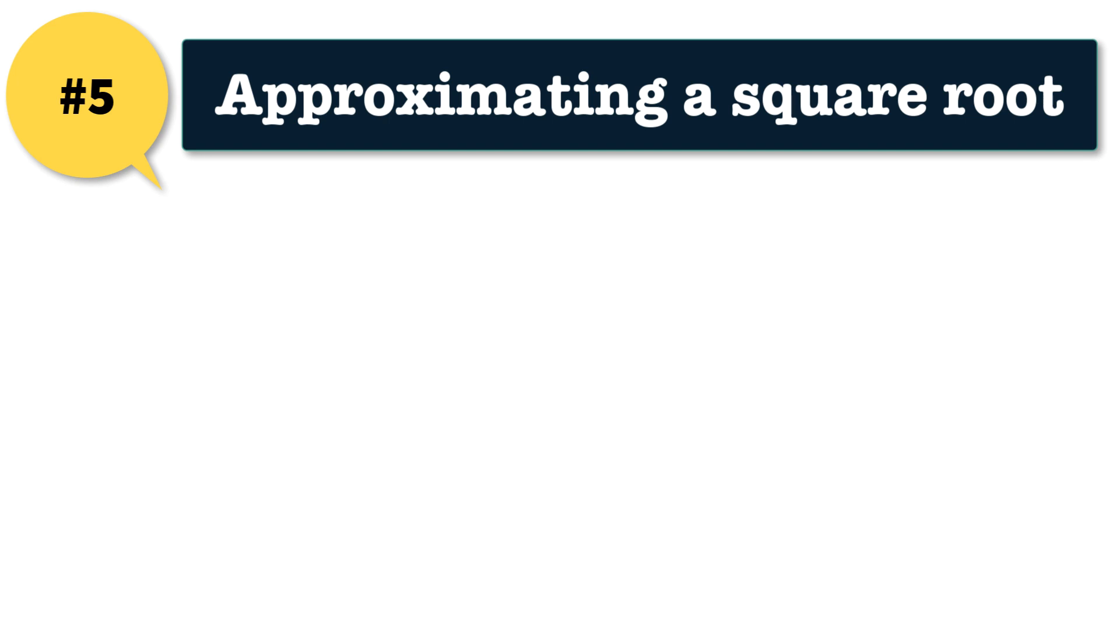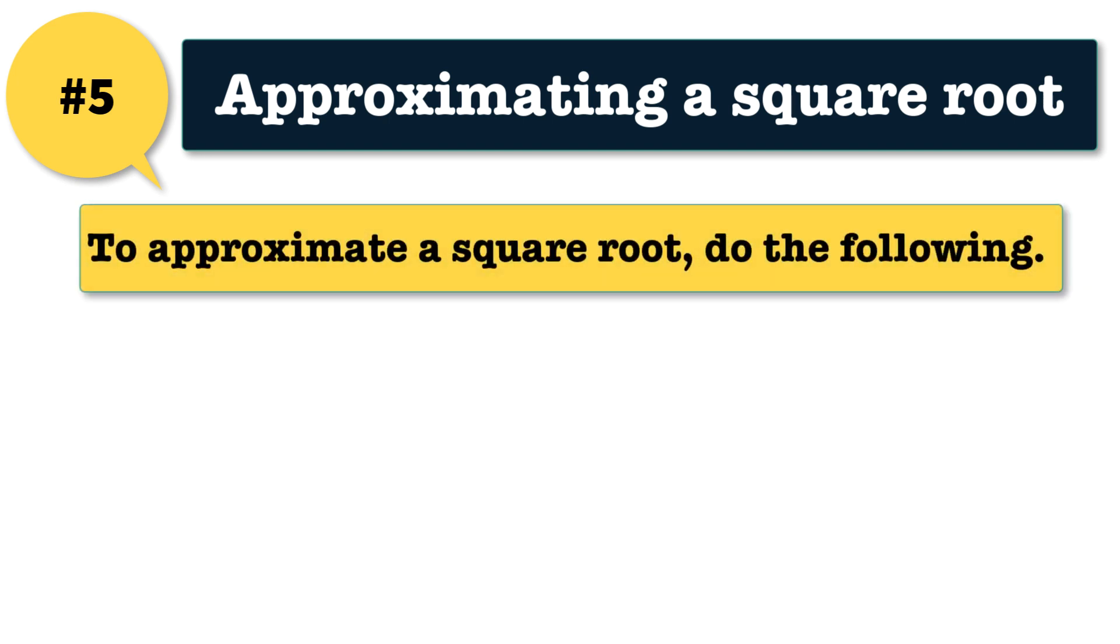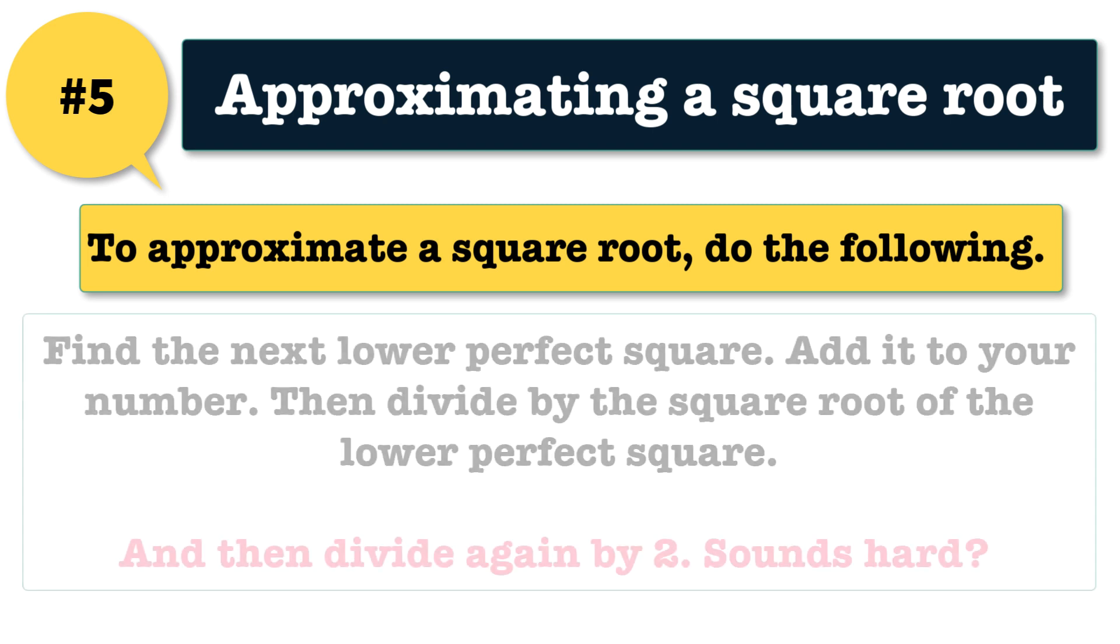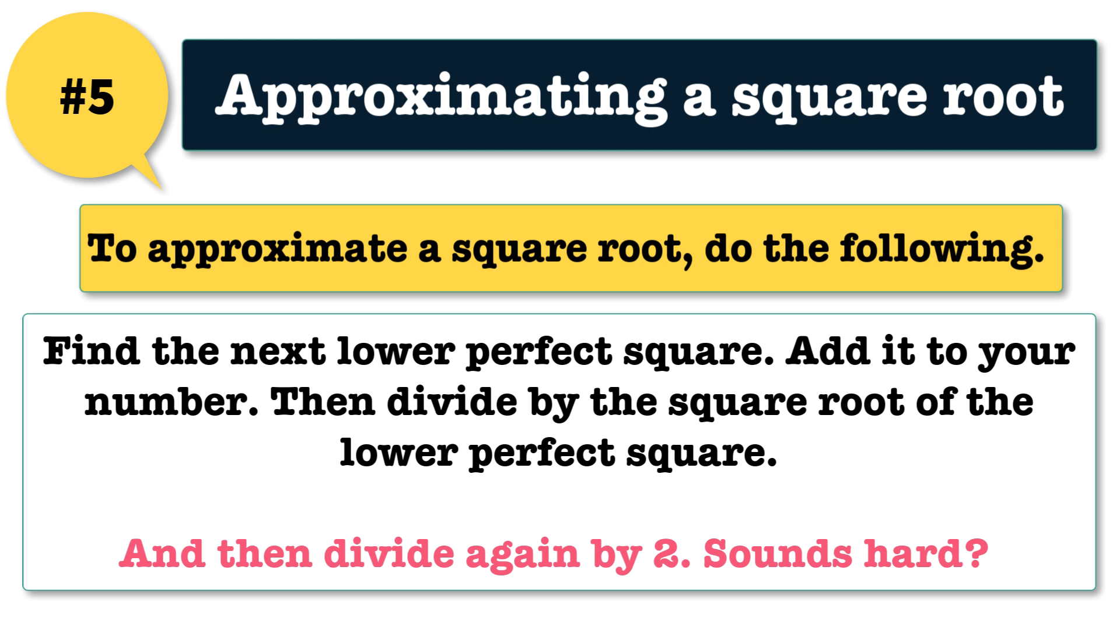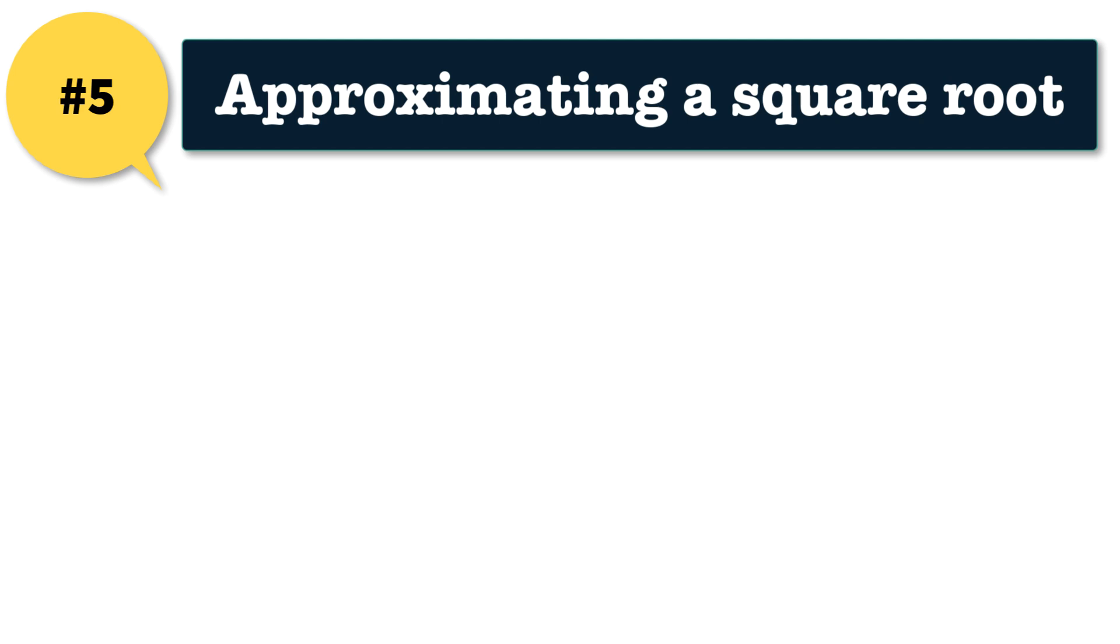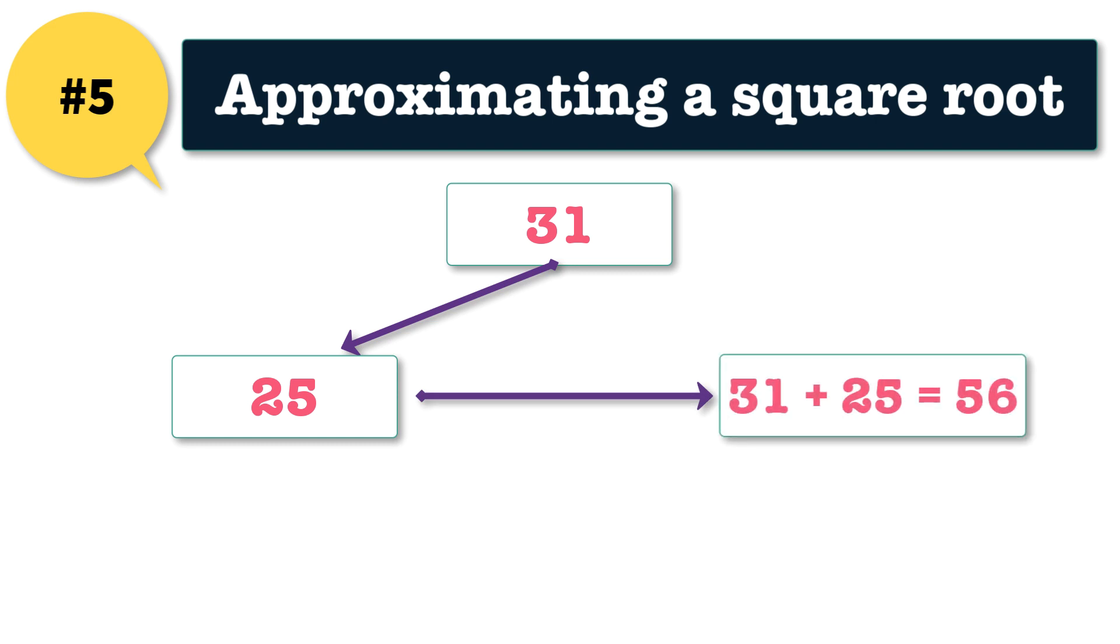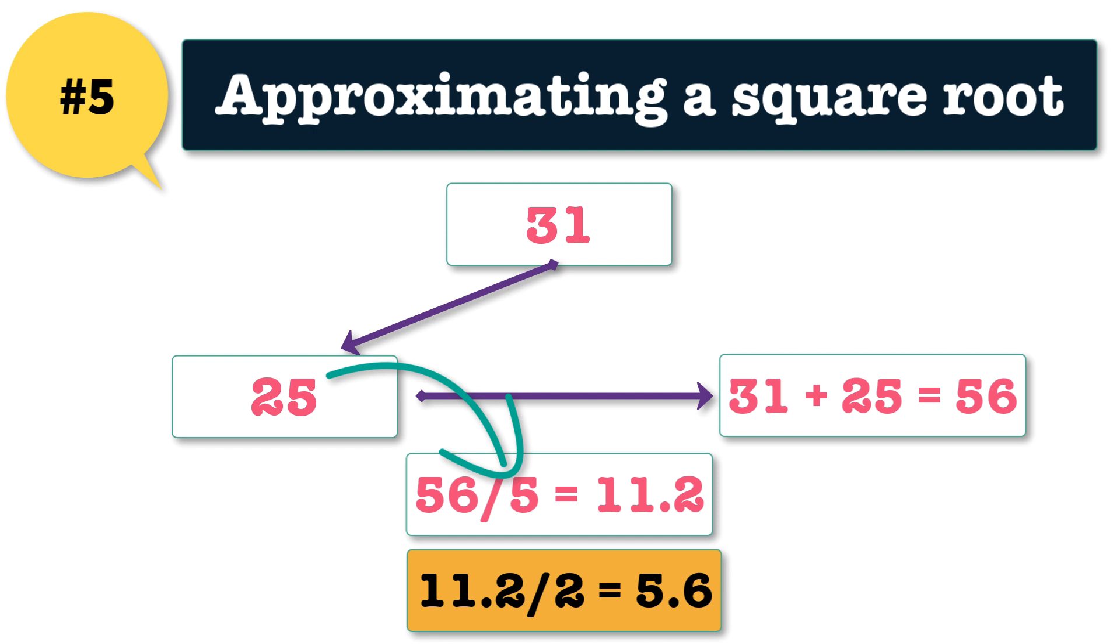Trick 5: approximating a square root. To approximate a square root do the following: find the next lower perfect square, add it to your number, now divide by the square root of the lower perfect square and then divide again by 2. It sounds hard, example will clear the doubts. Here's an example: take 31. The next lowest perfect square is 25, so 31 plus 25 is 56. Now divide by the square root of 25, so 56 by 5 is 11.2. Now divide by 2 to get 5.6 which is a solution. Very easy now.